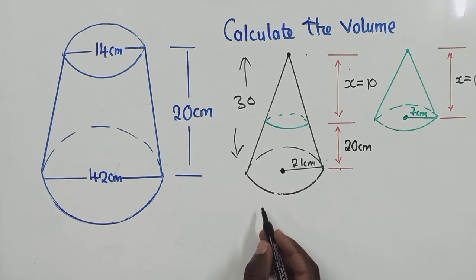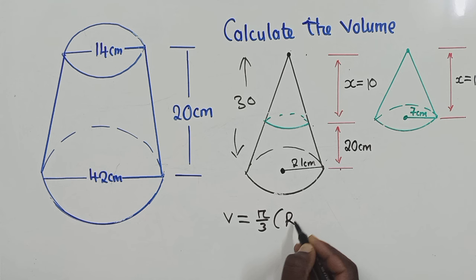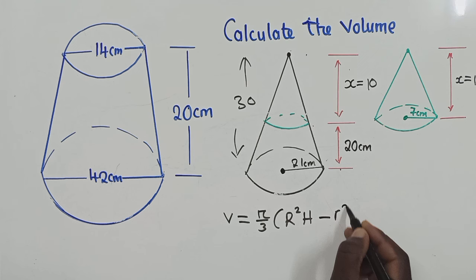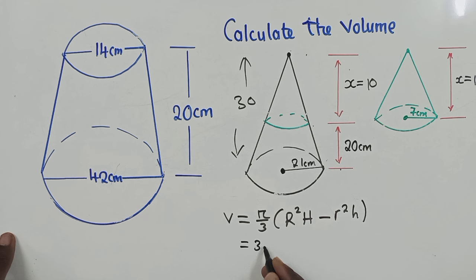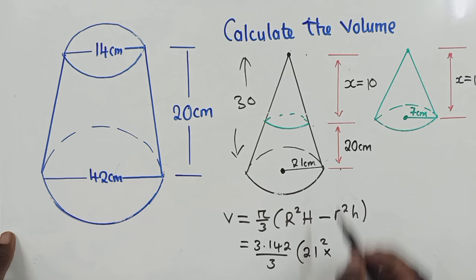So the formula will look like this. Volume is equal to pi over 3 capital R squared H minus small letter r squared h.